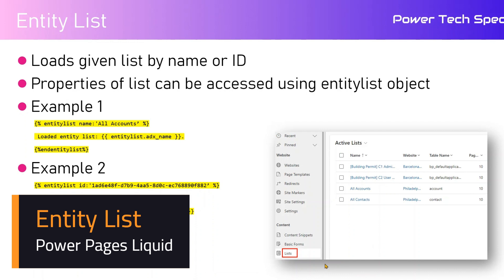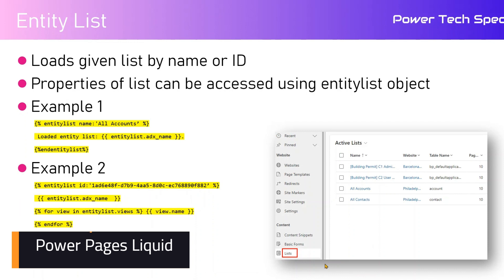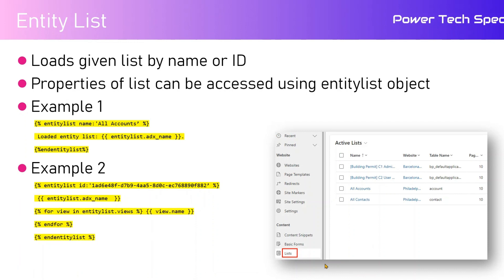In this video I will talk about the entity list liquid object within Power Pages. Entity list basically allows you to load a given list either by a name or by an ID. The properties of the list can be accessed using the entity list object. For example, if you have a list called 'All Contacts', that refers to a table of contacts, and you will be able to load that specific entity list in your Power Pages site.